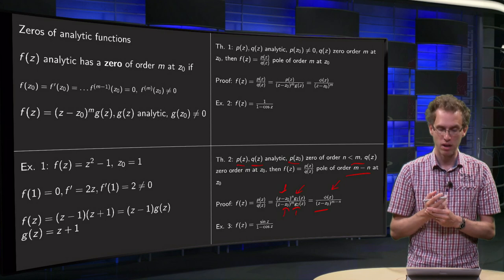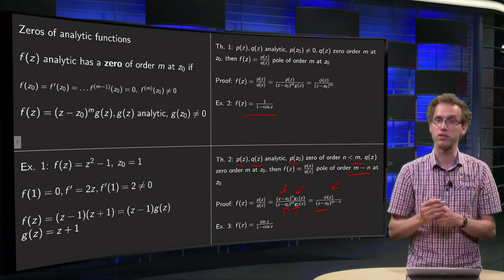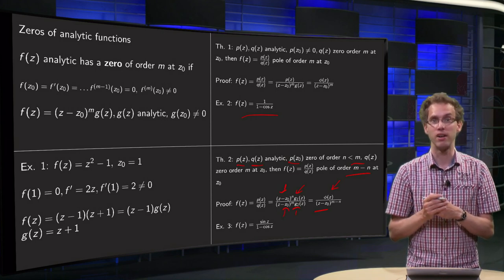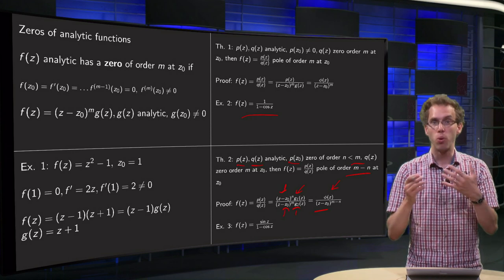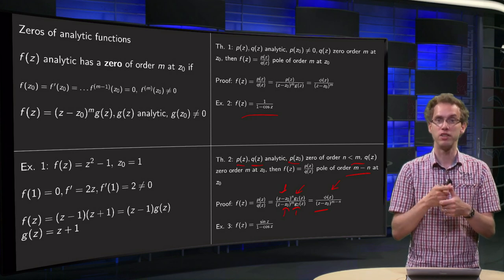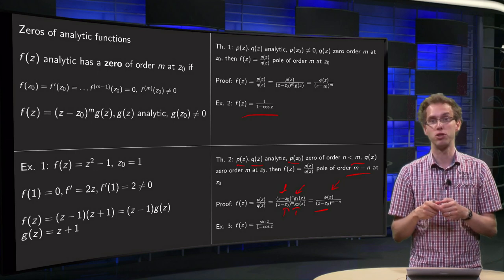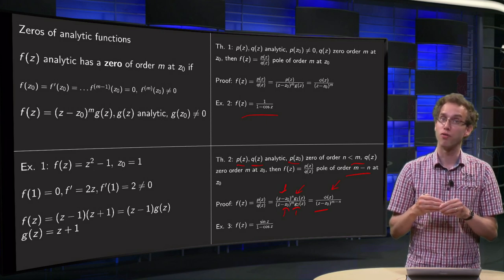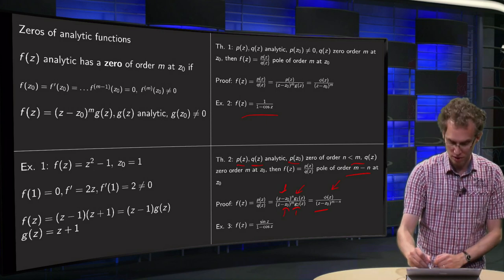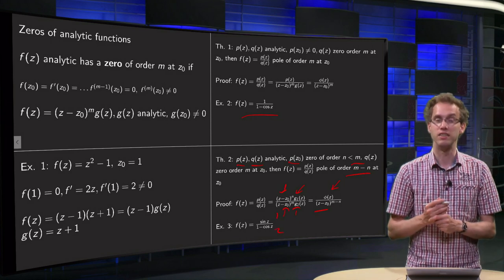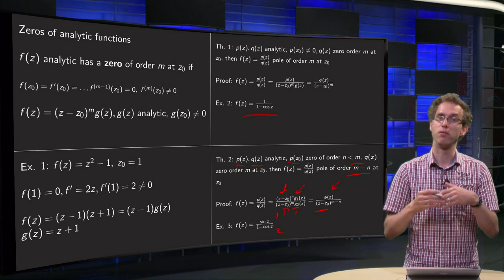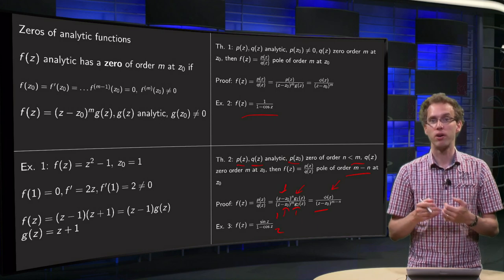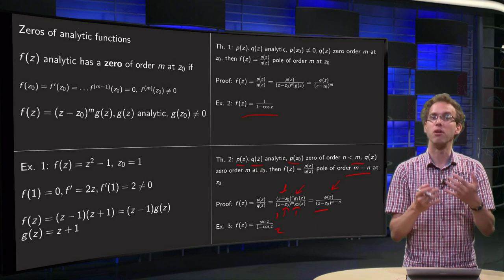For example, consider sine z over (1 minus cosine z). Plugging in z equals zero into the numerator gives zero. The derivative of sine is cosine, and plugging in zero gives 1, so the numerator has a zero of order 1. We already know the denominator has a zero of order 2. So z equals zero is a pole of order 2 minus 1 equals 1 of this function.